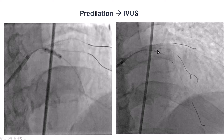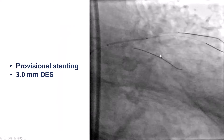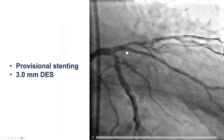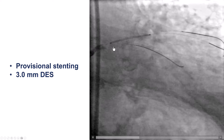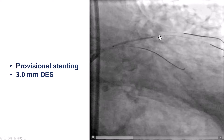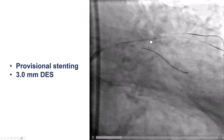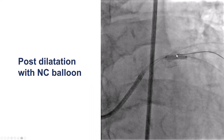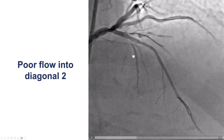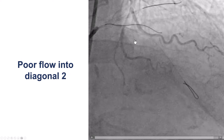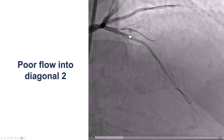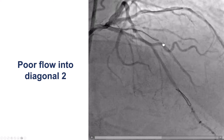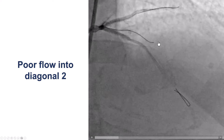After doing this, we pre-dilated, performed intravascular ultrasound to size the vessel, and then placed a long 3.0 mm drug-eluting stent proximal to the first diagonal and distal to the takeoff of the second diagonal branch. The stent was post-dilated with a non-compliant balloon, and we had two problems: one is the distal edge of the stent that doesn't look good, and the second is poor flow into the second diagonal branch.